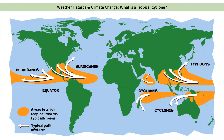So where do we find them? Here we've got a map of the world and this red line is the equator at zero degrees of latitude. You'll notice that we don't get tropical cyclones along the equator itself, but we do get them near to the equator — they form very near to it but not on it.